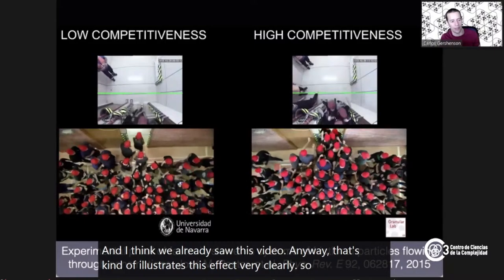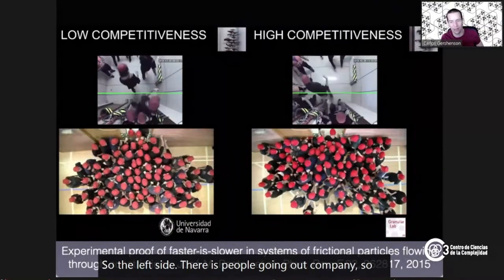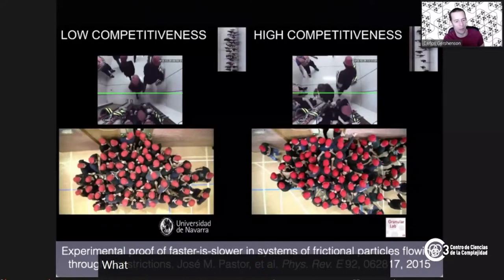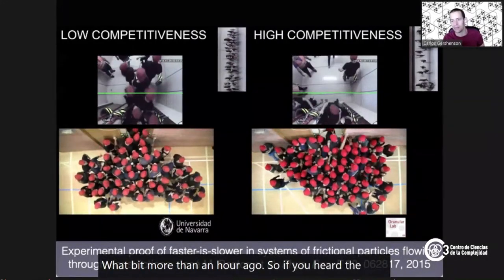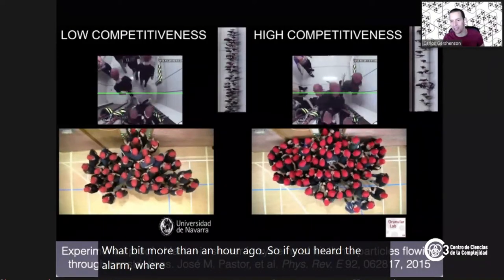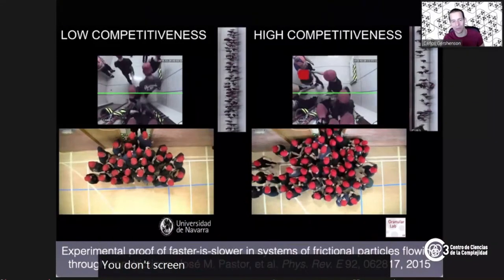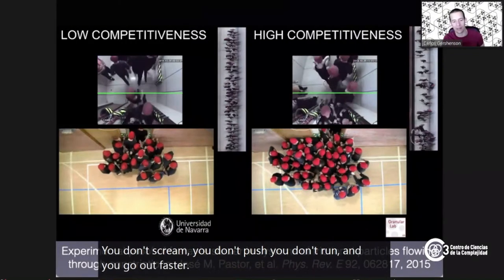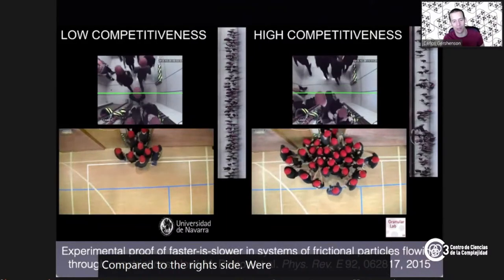On the left side, people go out calmly — they don't scream, they don't push, they don't run. And they go out faster compared to the right side, where it's every person for themselves. There's an analogy between turbulent flow and laminar flow: laminar flow gets disrupted by turbulence, and when you try to go faster, the turbulence makes things slower. The same happens with crowds.